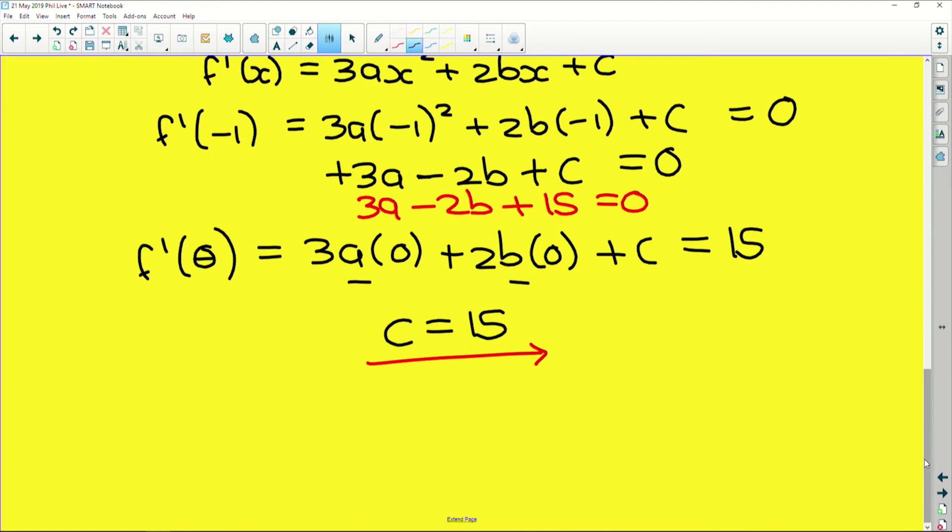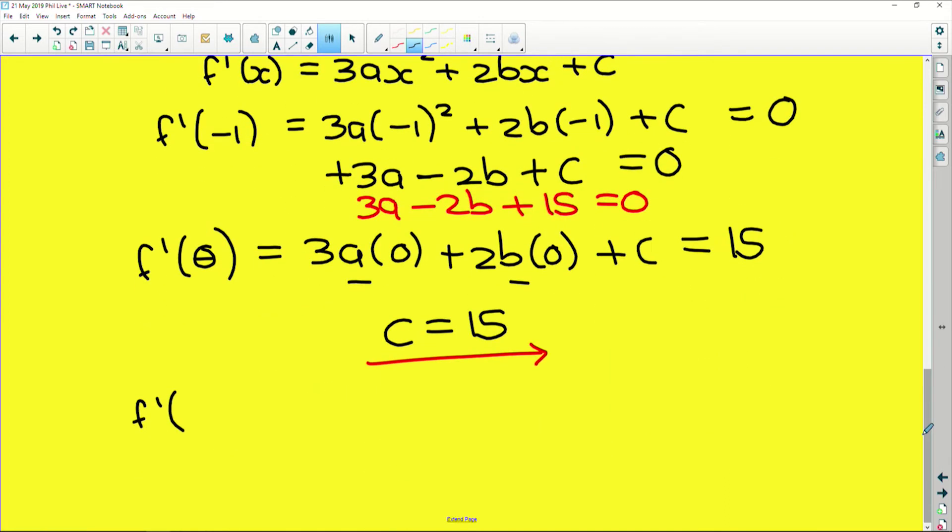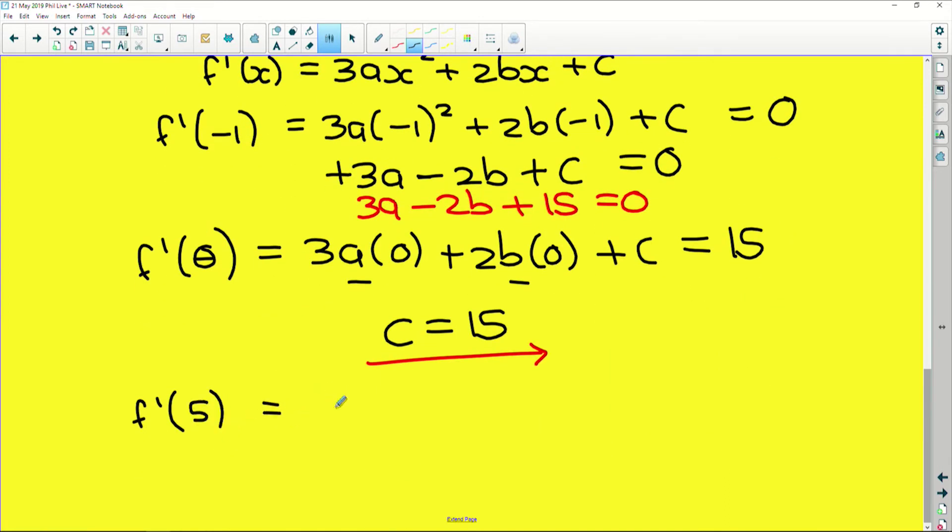And using the last point, we say f prime of the x value up here is five, we get 3a multiplied by 5² plus 2b multiplied by 5 plus c, which was fifteen, which we just found, and that also gives us zero, which means that 5² is 25, multiplied by 3 is 75, a plus 5 times 2 is 10b plus 15 equals zero.